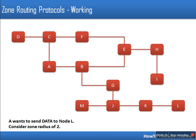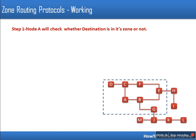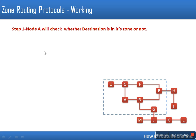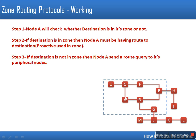Let's say node A wants to send data to node L and we are considering zone radius 2. First, node A checks whether the destination is in its zone. Since node L is outside the zone, node A initiates the reactive routing protocol and starts a route searching mechanism by sending a route query packet.